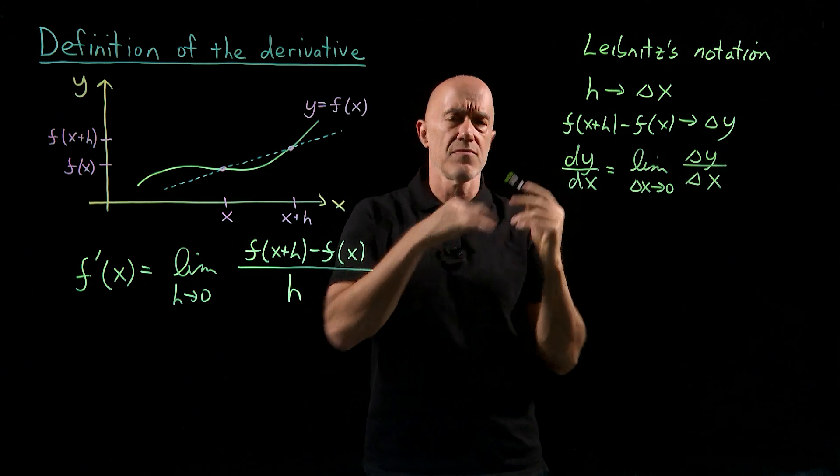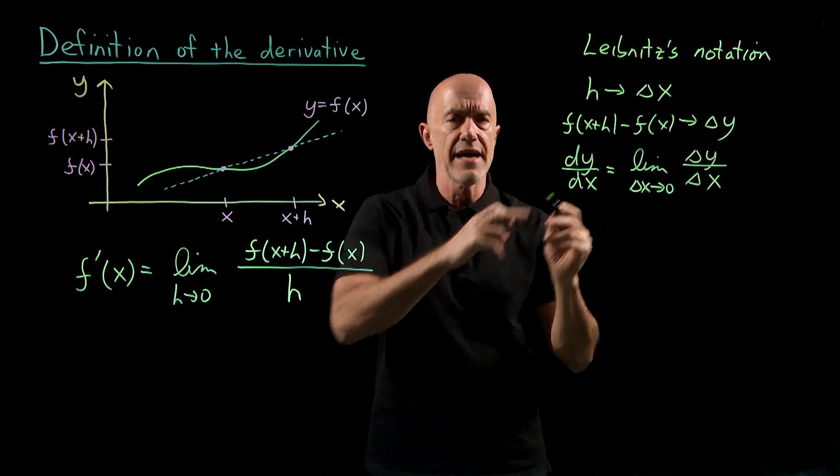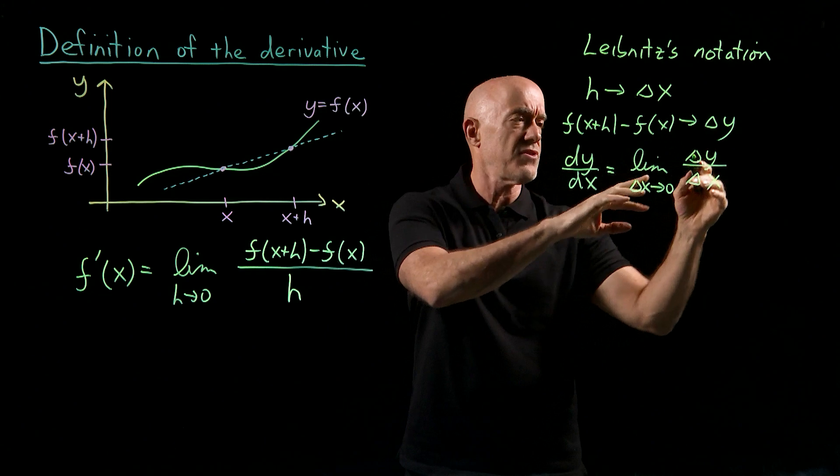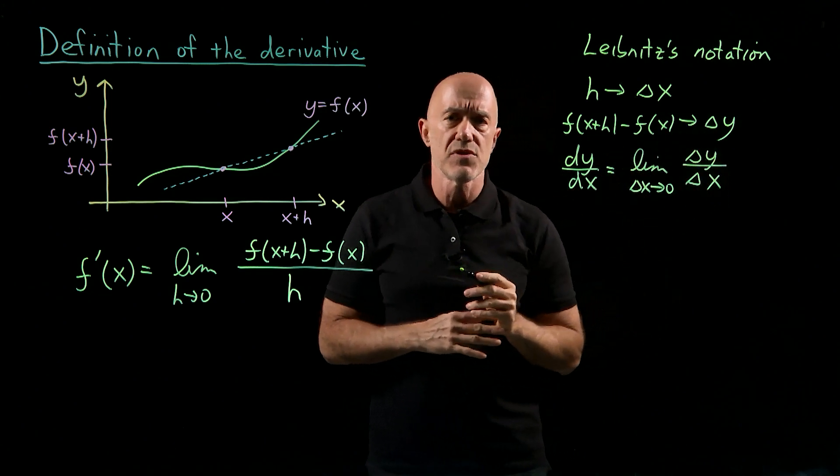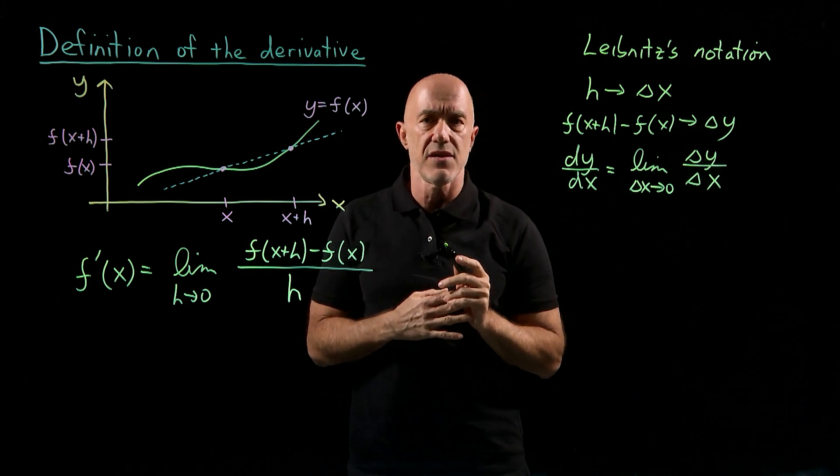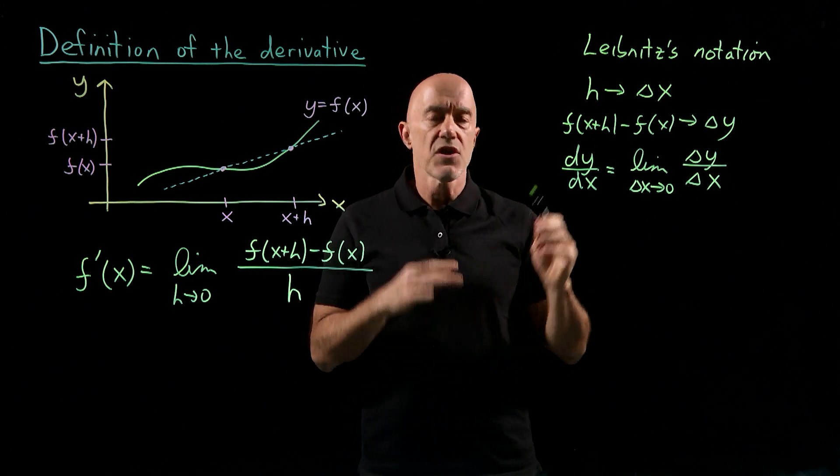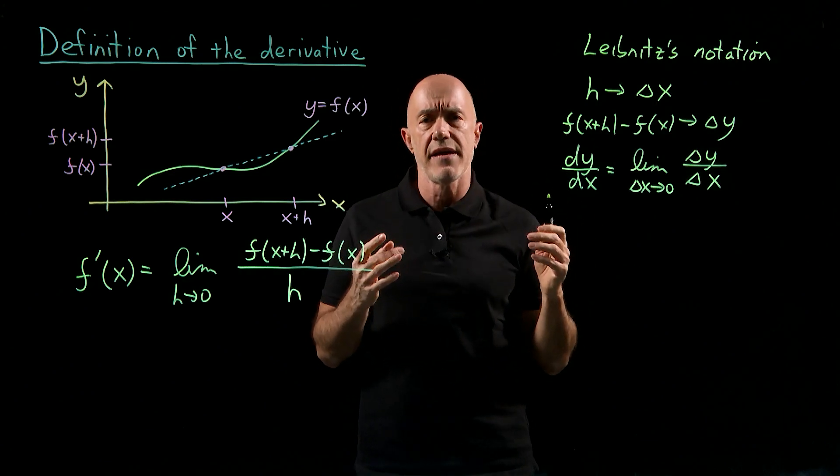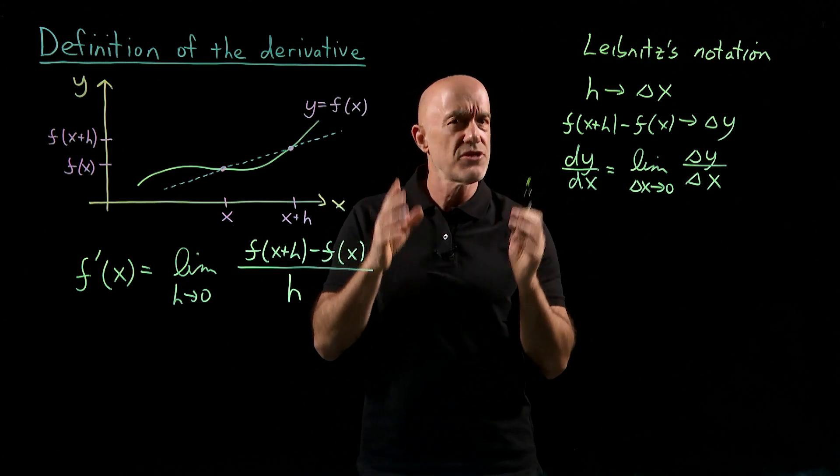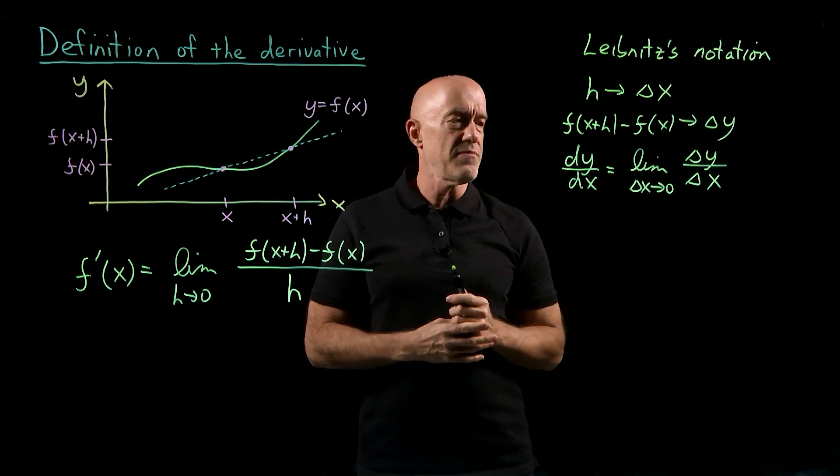So in the Leibniz's notation, we introduce what are called these differentials, dy and dx, which correspond to a delta y, which is a non-zero quantity, divided by a delta x, which is a non-zero quantity, but in the limit that both of them go to zero. So we say the differential dx and dy can be treated like numbers, but they're numbers that are larger than zero, but smaller than any real number, and we call them differentials.